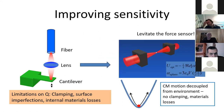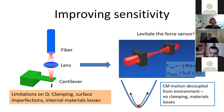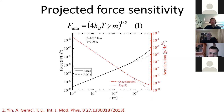This is where levitated optomechanics can play a role: by polarizing a particle and using a laser to create an optical potential, you can confine the particle at the focus of a laser or at the intensity anti-node in a standing wave trap. Studying the center-of-mass motion, the particle is relatively decoupled from the environment — there's no clamping mechanism, and internal material loss is not relevant since we're only looking at the center-of-mass mode, which is largely decoupled from phonons in the material.